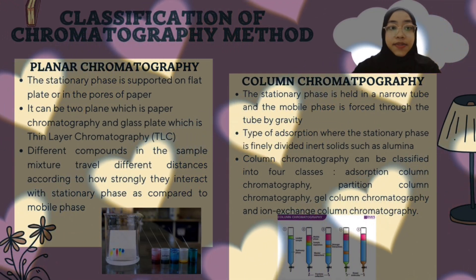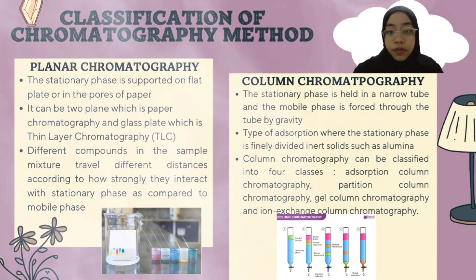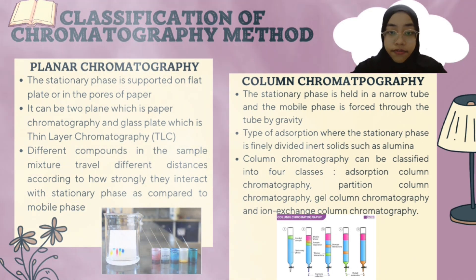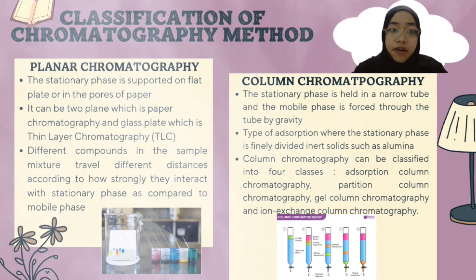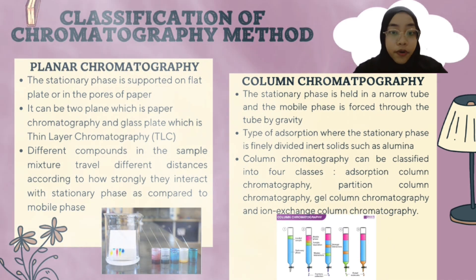There are two classifications of chromatography methods. The first is planar chromatography, where the stationary phase is supported on a flat plate or in the pores of paper. It can be two types: paper chromatography and thin layer chromatography (TLC). The different compounds in the sample travel different distances according to how strongly they interact with the stationary phase compared to the mobile phase. The mobile phase moves through capillary action.